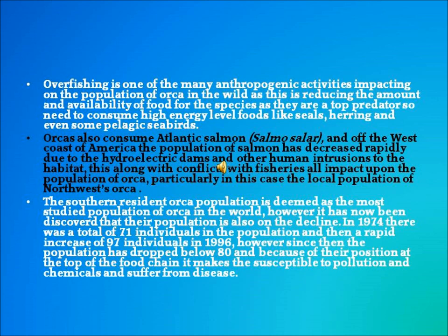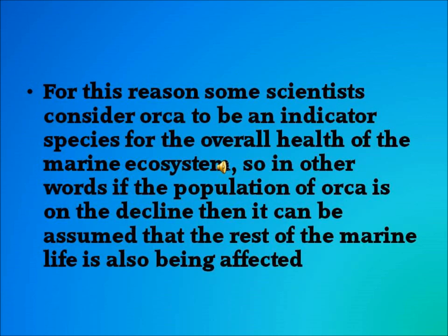The southern resident orca population is deemed the most studied population of orca in the world. However, it has been discovered that their population is also on the decline. In 1974 there was a total of 71 individuals, then a rapid increase to 97 individuals in 1996, but since then the population has dropped below 80. Their position at the top of the food chain makes them susceptible to pollution, chemicals and disease. For this reason, some scientists consider orca to be an indicator species for the overall health of the marine ecosystem — if the population of orca is declining, it can be assumed that the rest of marine life is also being affected.